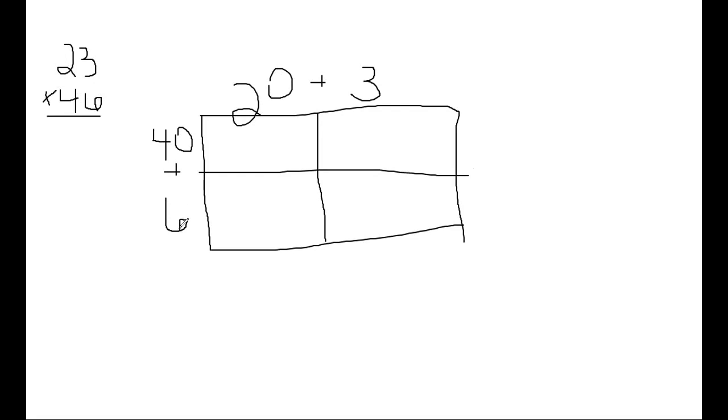If you remember when we did the area model in class, you use this number and this number together in this box. So 20 times 40. I'm going to take two times four is eight, and there's two zeros, so I add two zeros to the end. So 20 times 40 is 800.